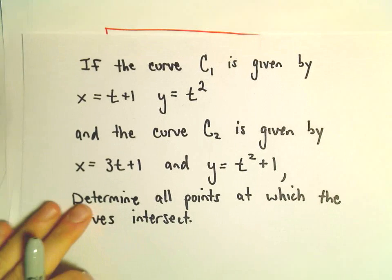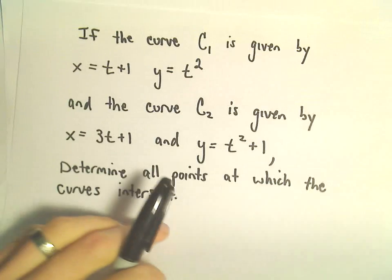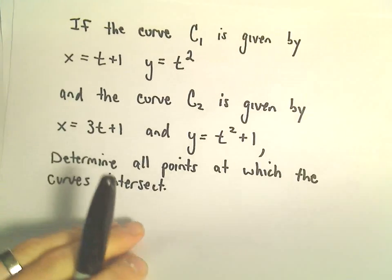All right, in this example, we've got a couple parametric curves that we want to find. At what point do they intersect? And to do this, what we're going to do is simply eliminate the parameter, set them equal to each other, and then we'll find the point or points of intersection.